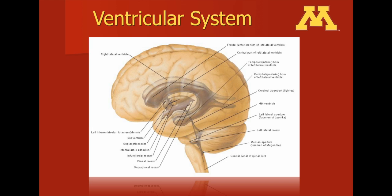Here's another depiction of the ventricular system overlaid on top of the human brain. The lateral ventricle is composed of the frontal horn, the body, the trigone, the occipital horn, and then the temporal horn. The characteristic C shape of the lateral ventricle is seen here.